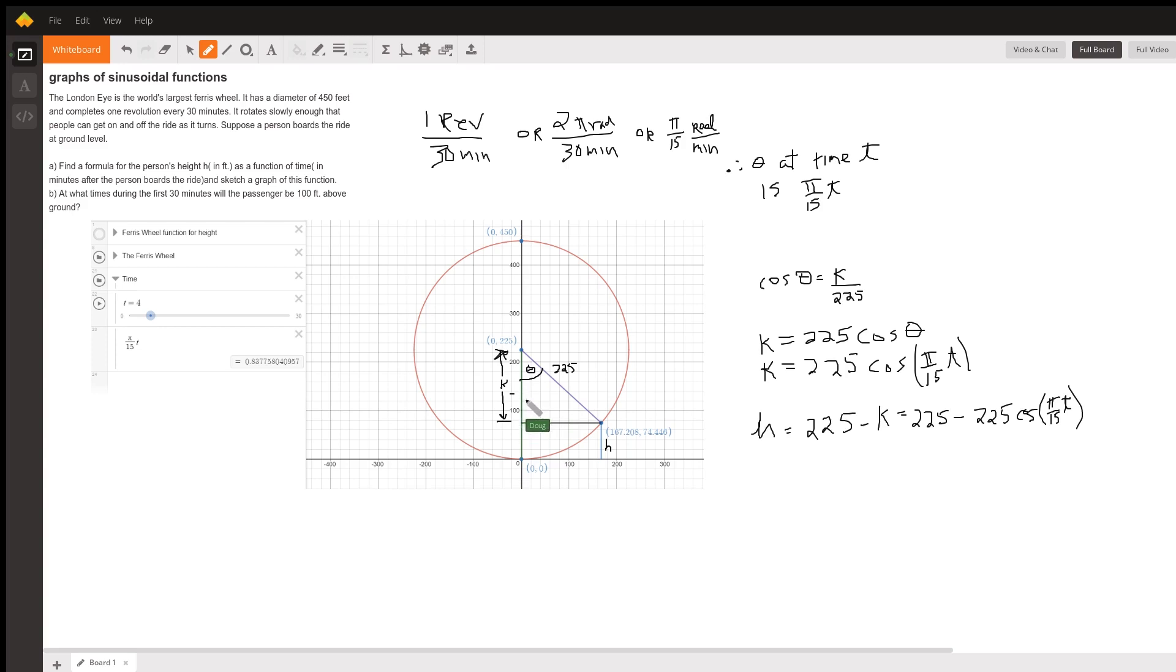After two minutes it will be 2π/15, after 15 minutes it will be 15π/15 or π radians. And then what we're trying to find is this height right here, h.